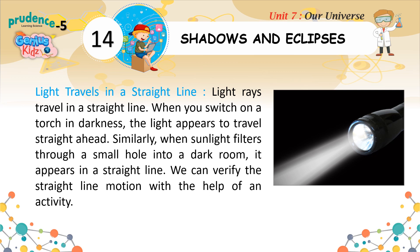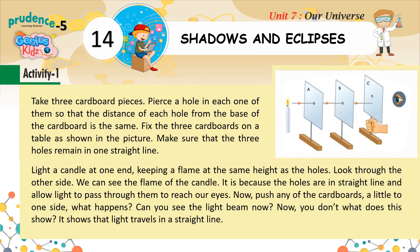We can verify the straight line motion with the help of an activity. Take three cardboard pieces. Pierce a hole in each one of them so that the distance of each hole from the base of the cardboard is the same. Fix the three cardboards on a table as shown in the picture. Make sure that the three holes remain in one straight line. Light a candle at one end, keeping the flame at the same height as the holes. Look through the other side — we can see the flame of the candle. It is because the holes are in a straight line and allow light to pass through them to reach our eyes.